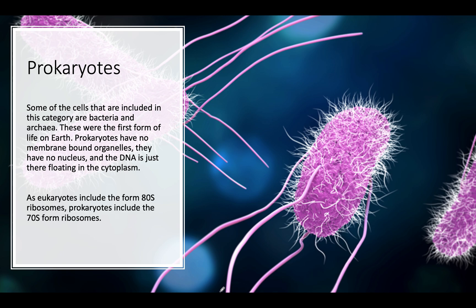Another key difference: eukaryotes have 80S ribosomes and prokaryotes have 70S ribosomes. This refers to the form that ribosomes are found in — 80S in eukaryotes and 70S in prokaryotes.